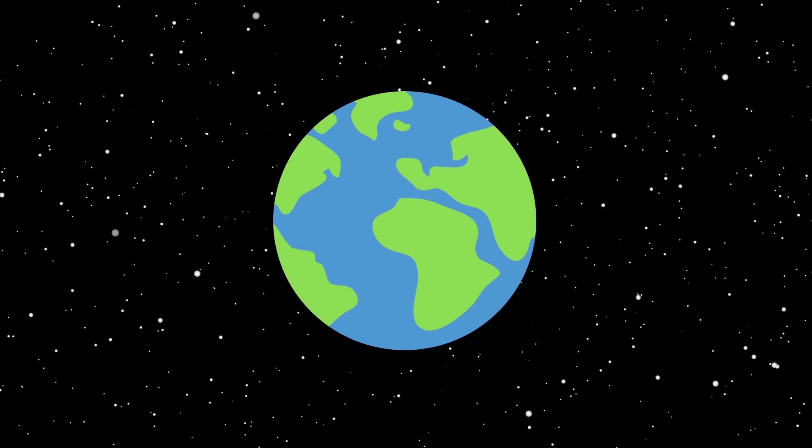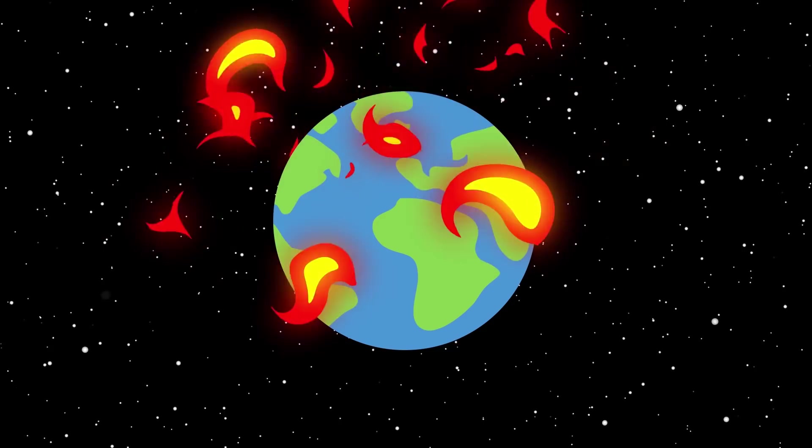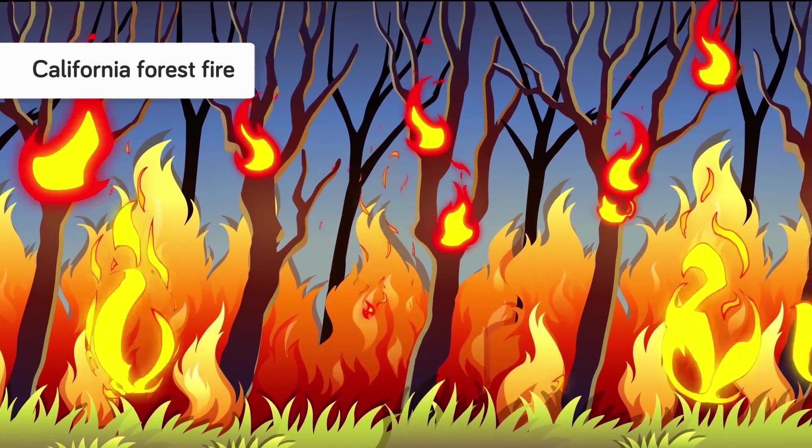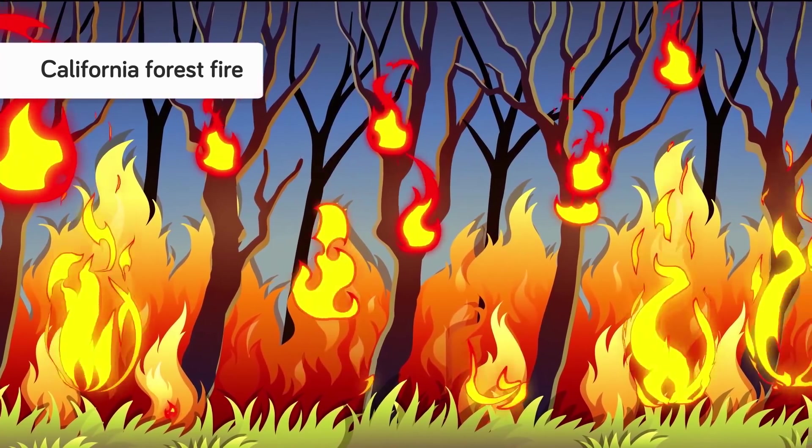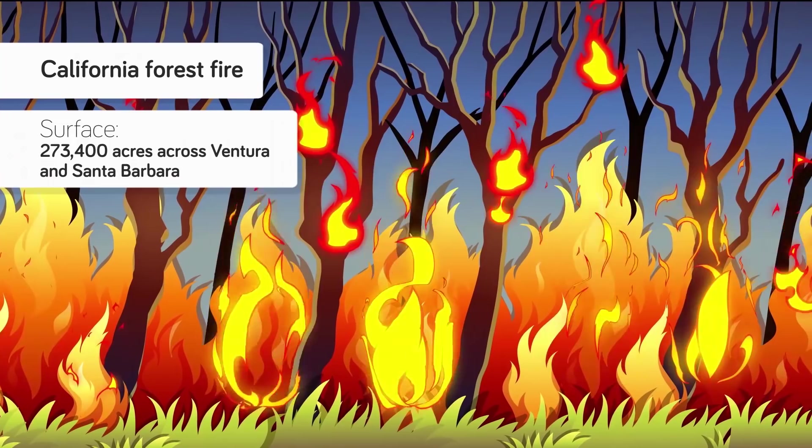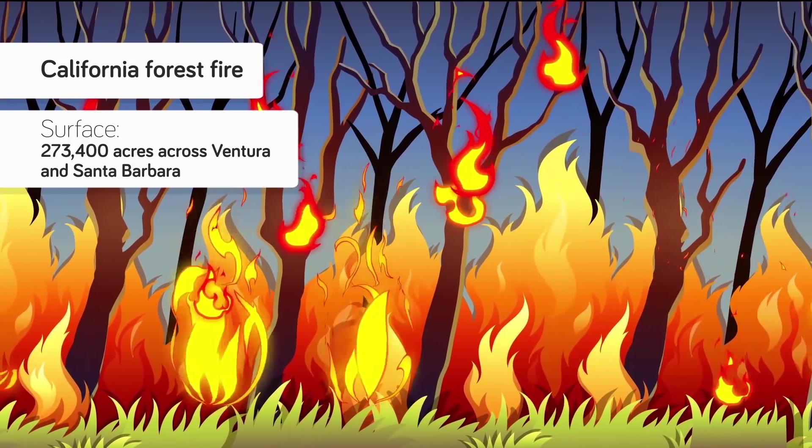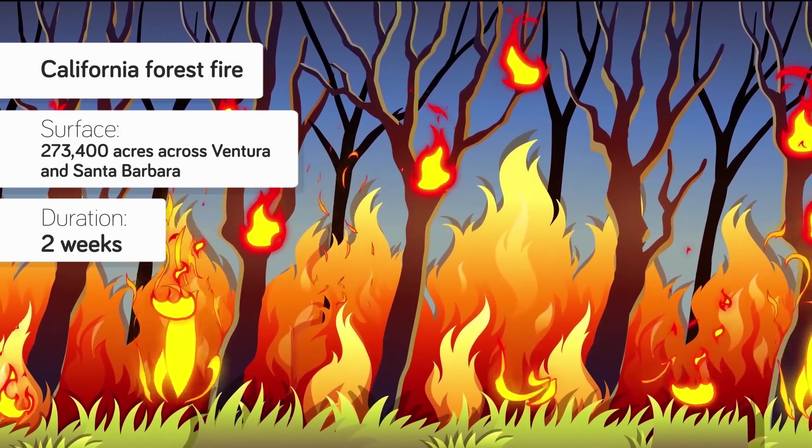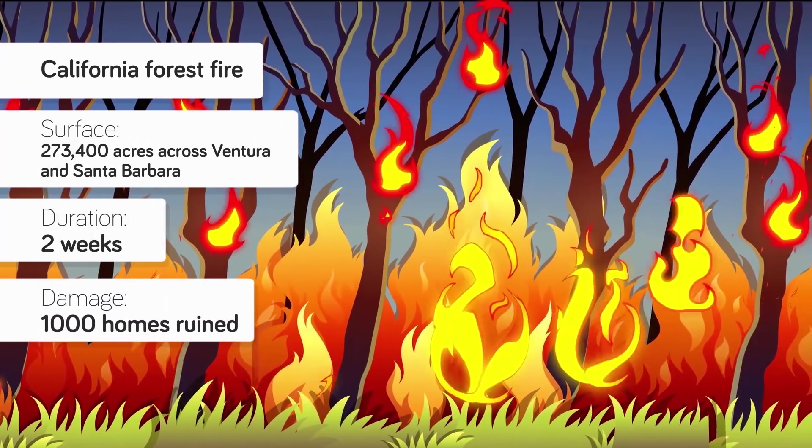The atmosphere would be threatened in other ways though. Soaring temperatures and a lack of rain would turn the planet into a giant tinderbox. California, known for its formidable forest fires, recently experienced the largest blaze ever recorded in the state after a multi-year drought. A whopping 273,400 acres across Ventura and Santa Barbara counties claimed over 1,000 homes and raged for two weeks.